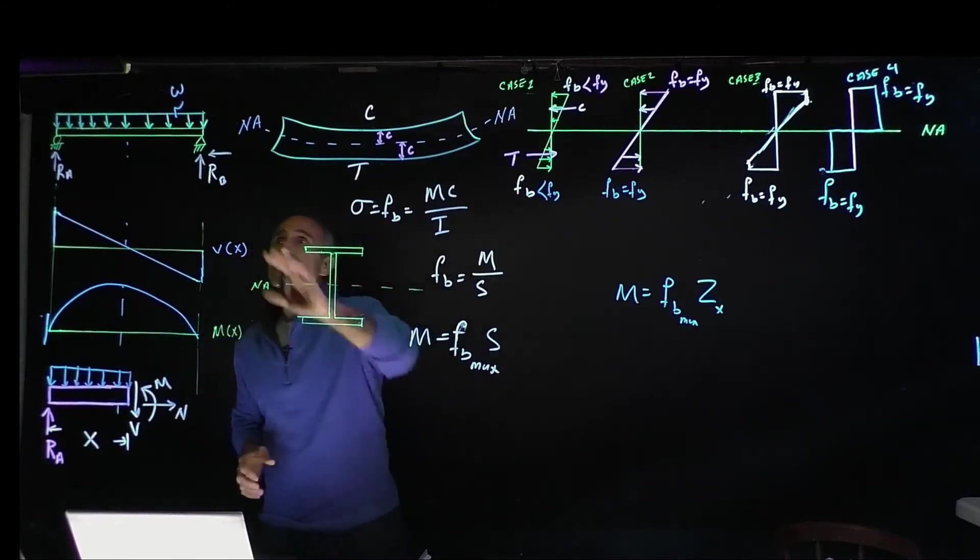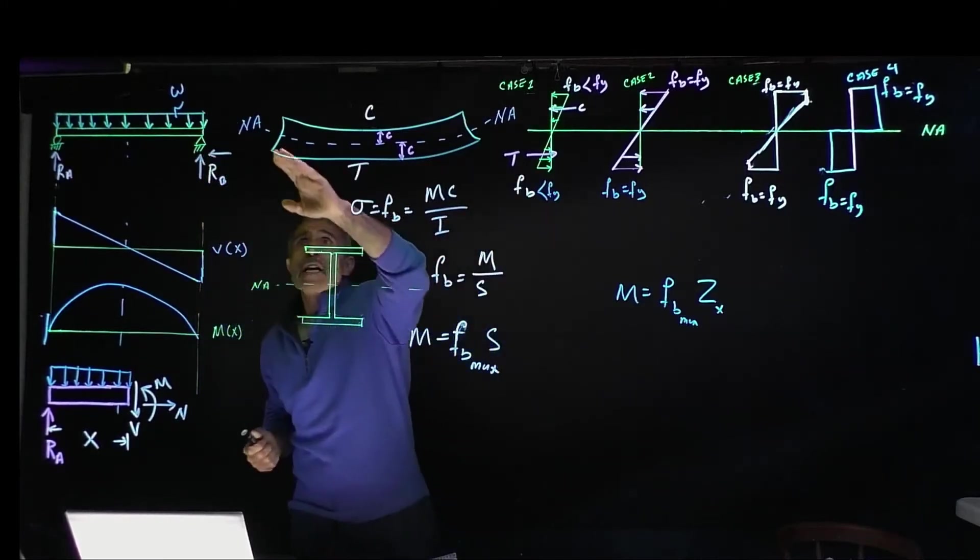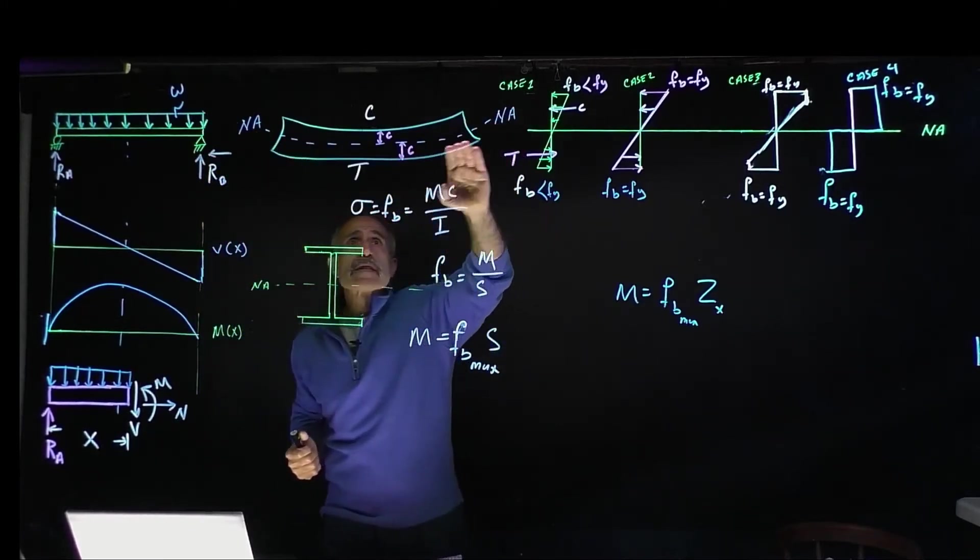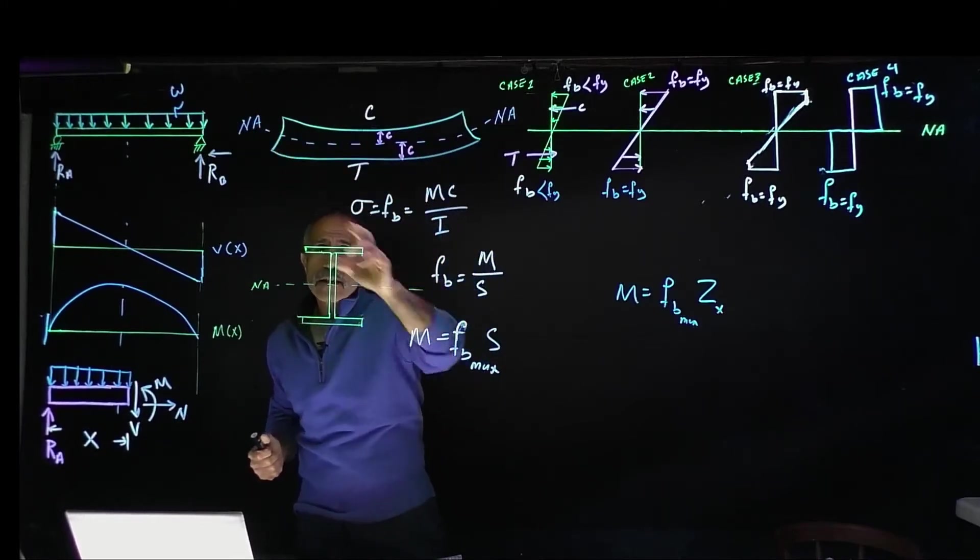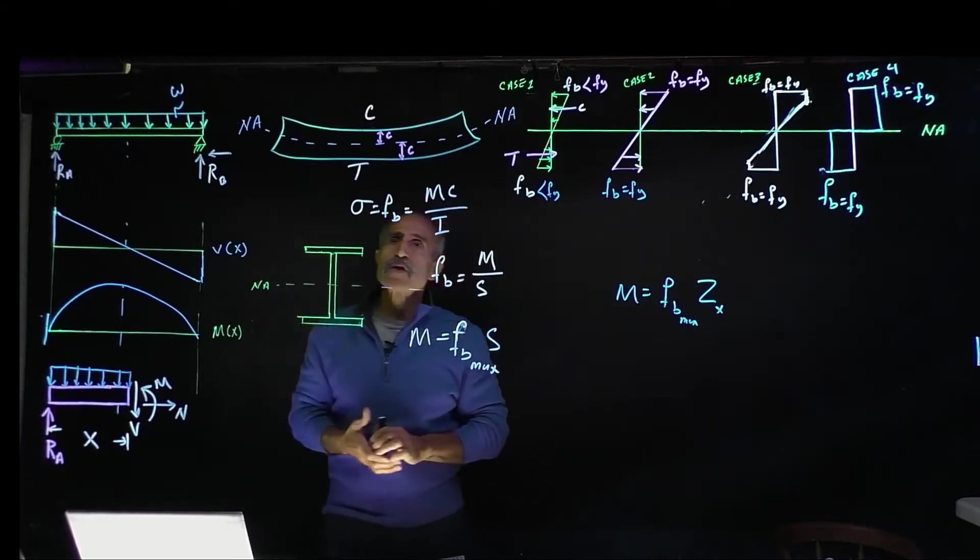Now if we take a look at this beam with the load on top of it, it's bending down. The middle of the beam, this is our neutral axis. Say this is an I-beam, so our neutral axis is down the center.